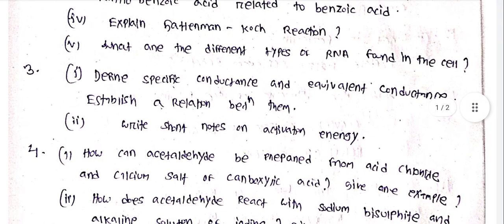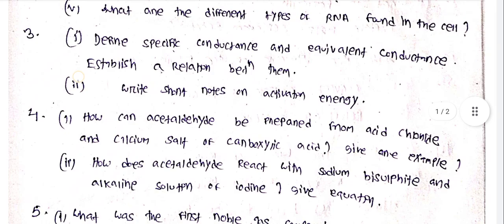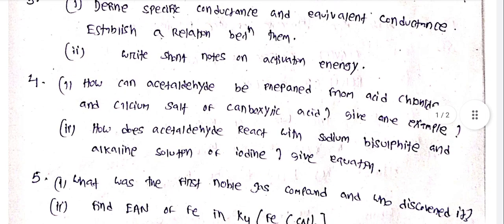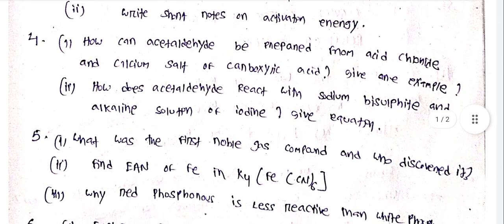What are the different types of RNA found in the cell? Define specific conductance and equivalent conductance. Establish a relation between them. Write short notes on activation energy. How can acetaldehyde be prepared from acid chloride and calcium salt of carboxylic acid?